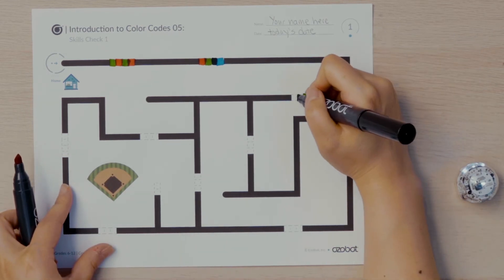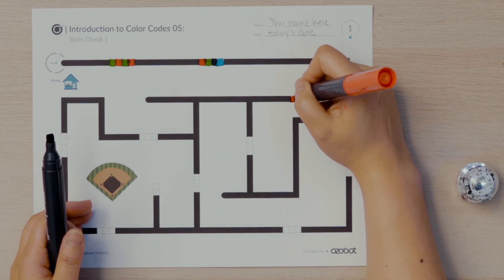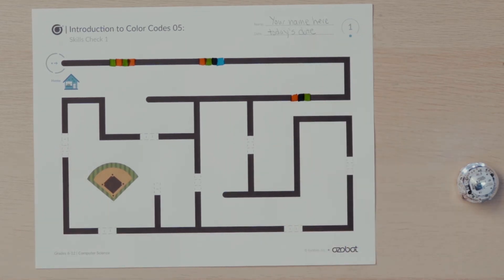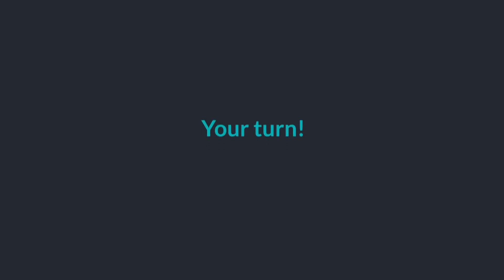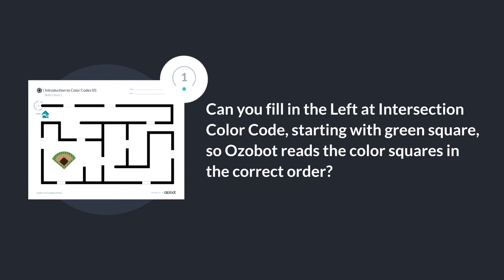Remember, the color code needs to be filled in with the green block being the first color Ozobot will read as it goes over the code. Can you fill in the left at intersection color code starting with the green square so Ozobot reads the colored squares in the correct order?